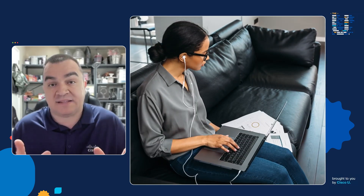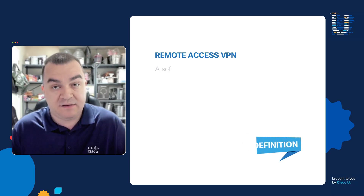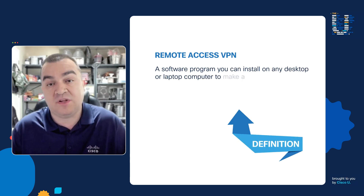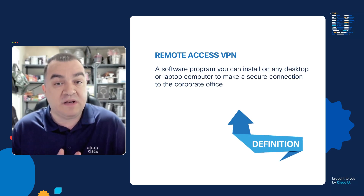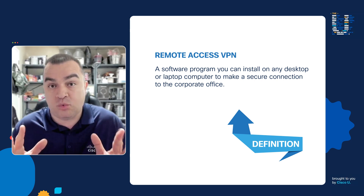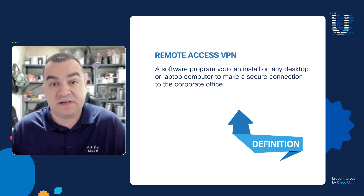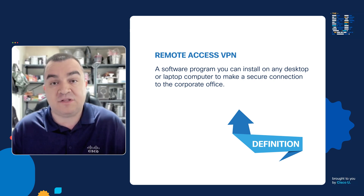Now, that is a thing of the past when it comes to working from home. Because now from the comforts of your own home office, you can use a technology called Remote Access VPN, which is a software program that you can install on any desktop or laptop computer to make a secure connection over to the corporate office, simulating that you're working from the office because you have all the resources you would have as if you were in the office, using a secure connection to make that possible.